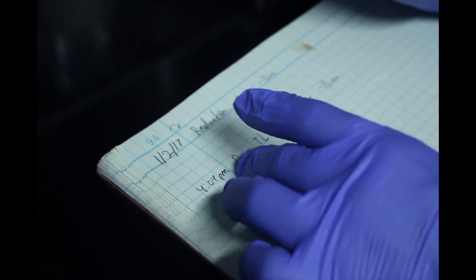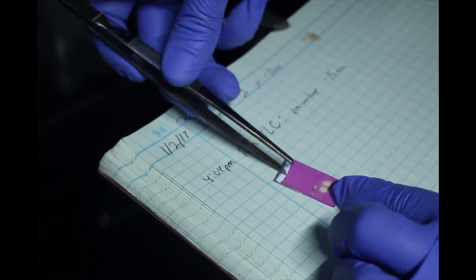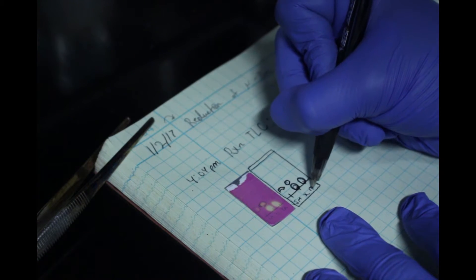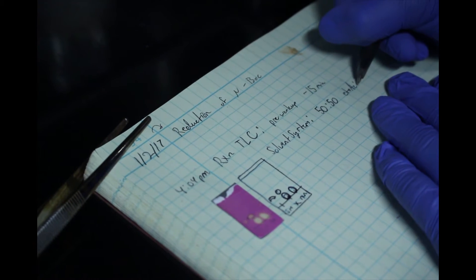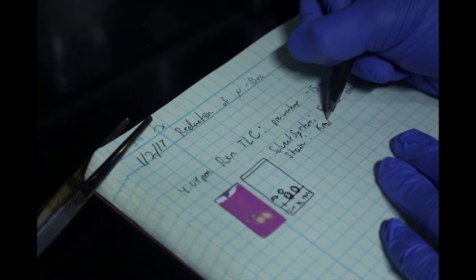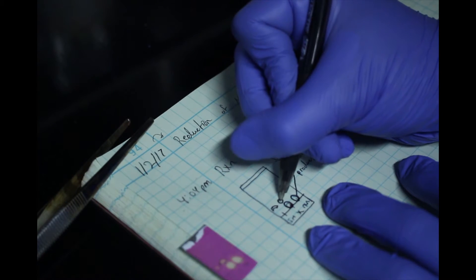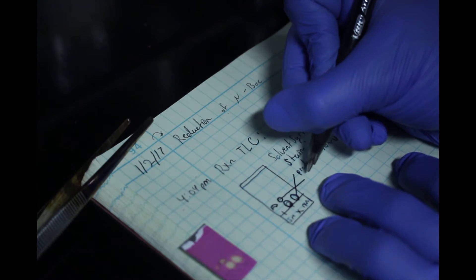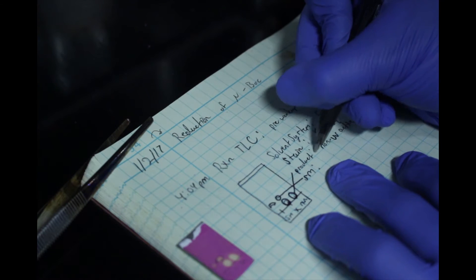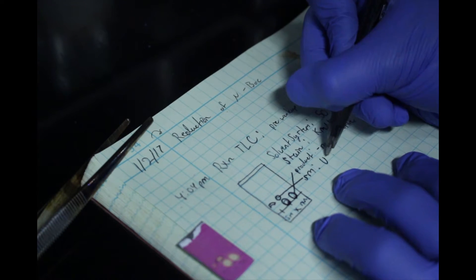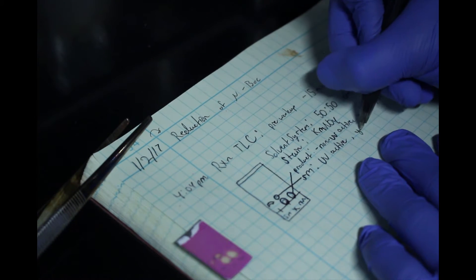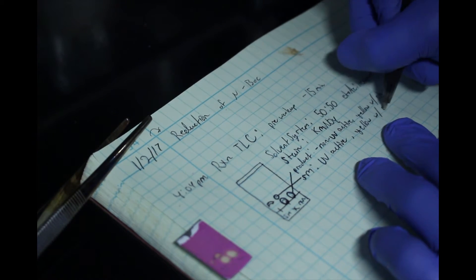When recording TLC information in your notebook, be sure to identify the following: A traced drawing of the TLC plate. Solvent system that achieves an ideal separation. TLC stain. Each spot should be labeled with what compound it is, starting material, product, unknown, etc., whether or not it is UV active, and the color the spot turned using your stain. If monitoring the progress of a reaction, indicate the time TLC was performed.